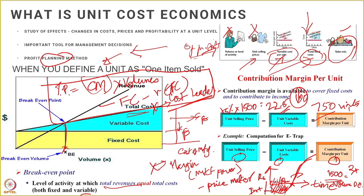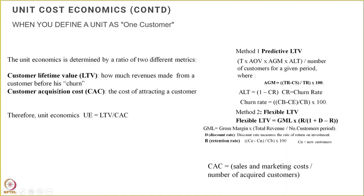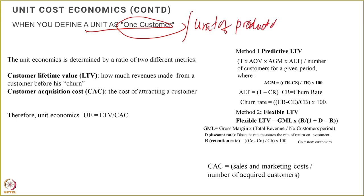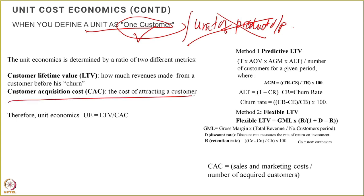There's another type of business increasingly encountered nowadays — not a linear flow of production sold into the market, but more in terms of marketplaces or software as a service. For these businesses, unit cost economics works differently. We define the unit of business as a customer, as opposed to a unit of product output. This customer buys our service, and unit cost economics is now determined by a ratio of two different metrics.